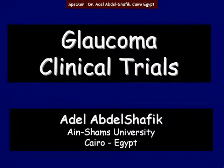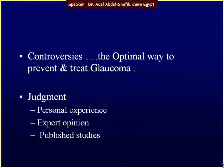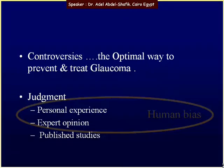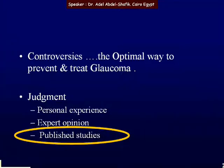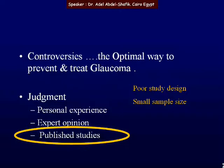I'm going to talk about the glaucoma clinical trials. There are a lot of controversies about the optimal way to prevent and treat glaucoma. Our judgment may come from personal experience, expert opinion, or published studies. The first two factors are liable for human bias. On the other hand, published studies may be of a poor study design or small sample size, hence affecting the outcome. This led to the importance of the newly developed clinical trials.